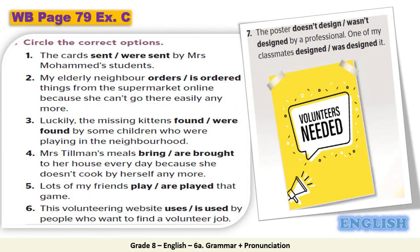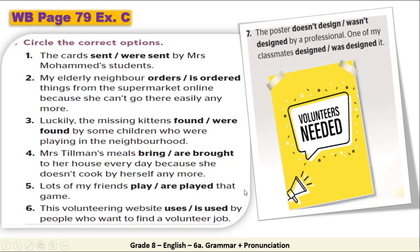Please open your Workbook page 79, exercise C. You have to circle the correct options. Read each sentence carefully and play the video again when you finish to check your answers. Before checking, here's a tip: look at the subject of the sentence. If the subject can do the verb, choose the active voice. If the subject cannot do the verb, choose the passive.